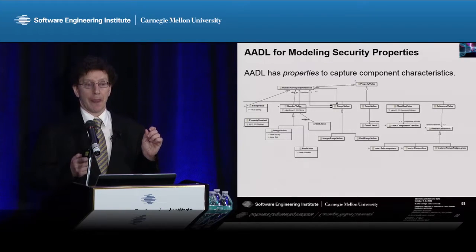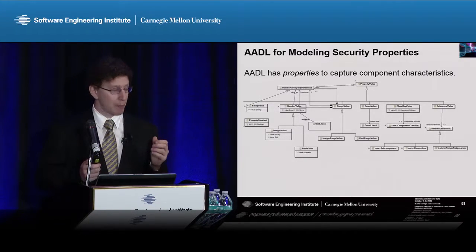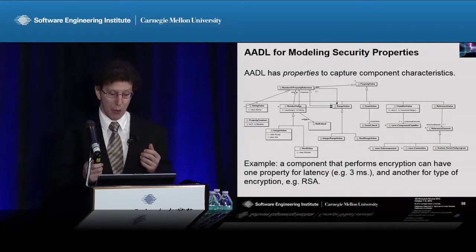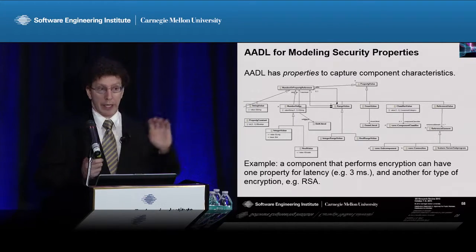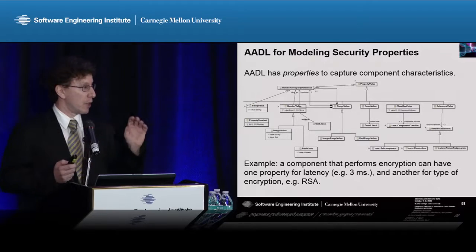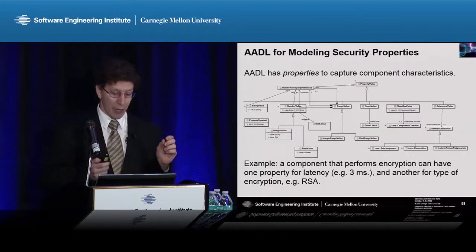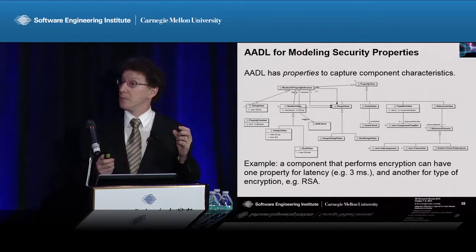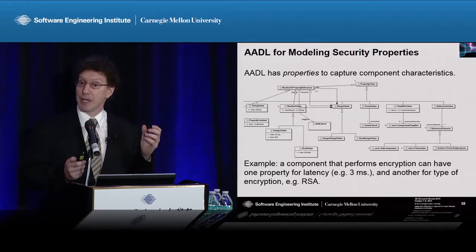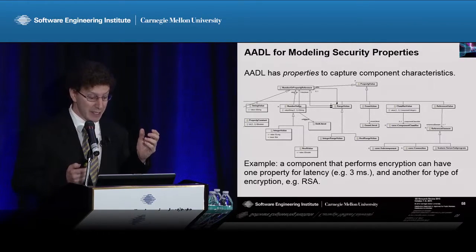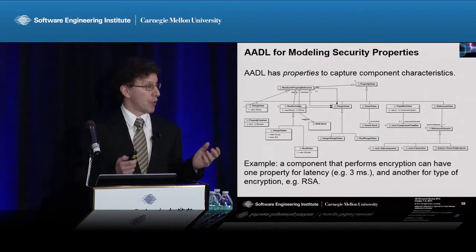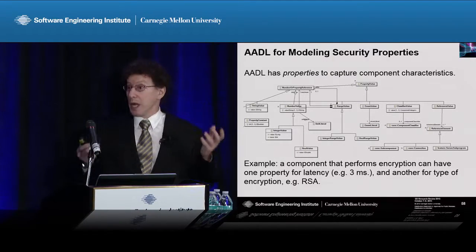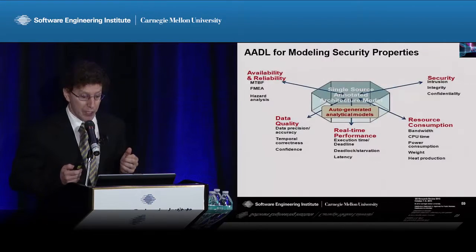AADL contains a set of built-in properties that allow you to capture characteristics of components. Following on the example that Peter was talking about, you might have a component that performs encryption. This component might have one property specified for latency and another for the type of encryption, and you can do analyses based on the values of these properties.